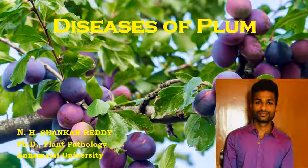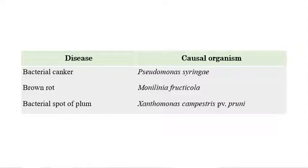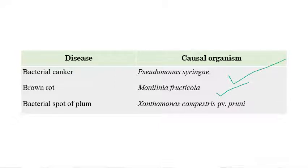Diseases of plum — we will see the list of important diseases in plum. The first one is bacterial canker, which is caused by Pseudomonas syringae. Brown rot is caused by Monilinia fructicola, and bacterial spot of plum is caused by Xanthomonas campestris pathovar pruni.